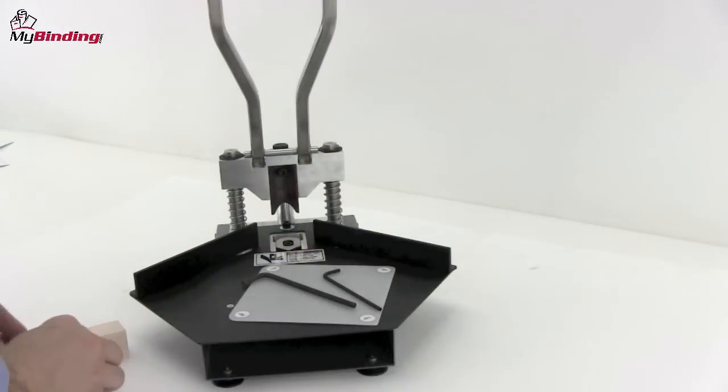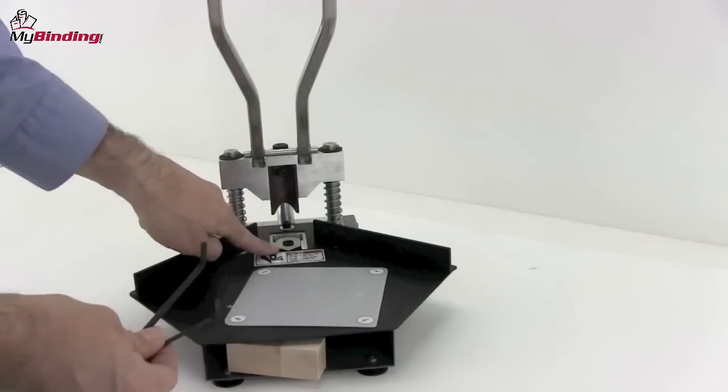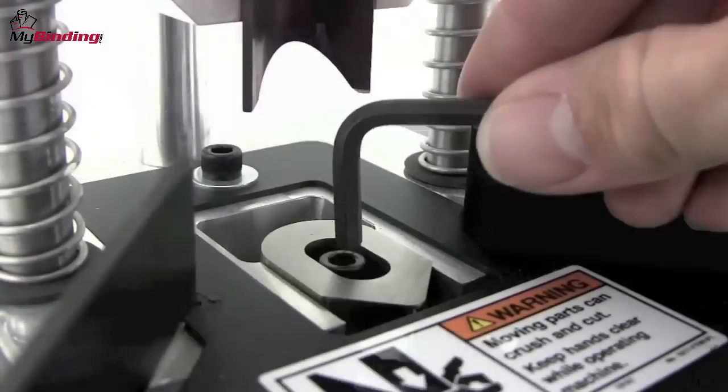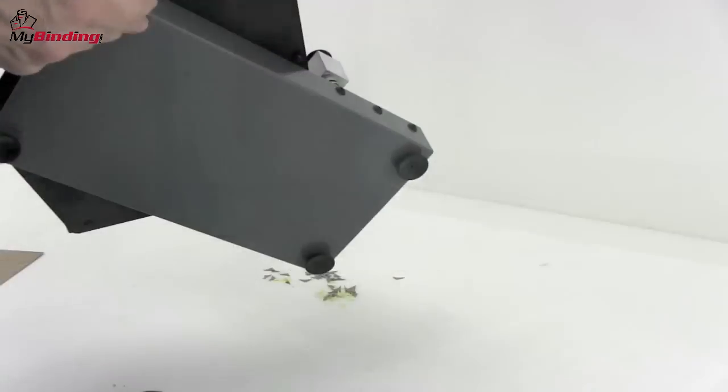It comes with a squaring block that's easily stored in the unit itself, two Allen wrenches for the adjustment of the die, and the die cutting system is easily replaced as well as changed for different sizes.